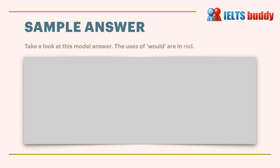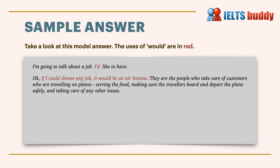Let's look at a sample answer to illustrate the uses of 'would' — you can see them highlighted in red. It's quite a long answer so there'll be a link below the video so you can read it afterwards. So: 'I'm going to talk about a job I'd like to have. If I could choose any job, it would be an air hostess. They are people who take care of customers travelling on planes, serving food, making sure travellers board and depart the planes safely, and taking care of other issues.'